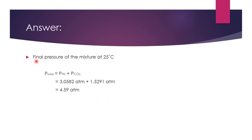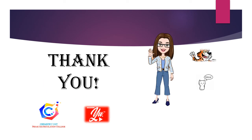Last but not least, we calculate the final pressure of the mixture at 25 degrees Celsius using the formula: P_total = P_H₂ + P_CO₂. So 3.0582 atm plus 1.5291 atm gives a final answer of 4.59 atm. In this calculation you also get marks, so the total for this question is five marks if all answers are correct. That's it — thank you for watching, hope you all learned something. Please remember to subscribe, like, and share this channel.